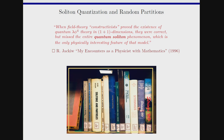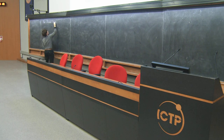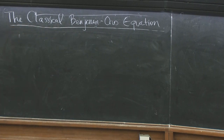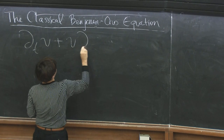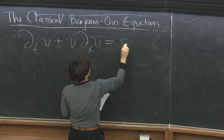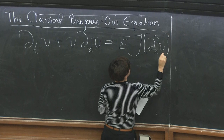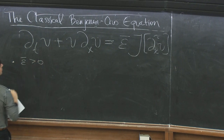Let me write down the equation I'll be studying and presenting some recent results for. I'll be studying this classical Benjamin-Ono equation. The time derivative of v plus v times the spatial derivative of v is equal to some constant epsilon-bar times j, the Hilbert transform of the second derivative of v. So epsilon-bar throughout is a positive constant.